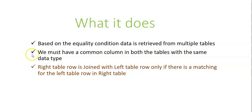For comparison of values there must be a common column. Common column does not mean it should have the same name — it should have compatible data types to compare the values in both the tables. The right table row is joined with the left table row only if there is a matching value.